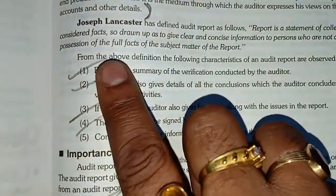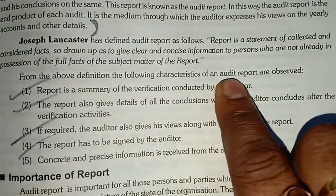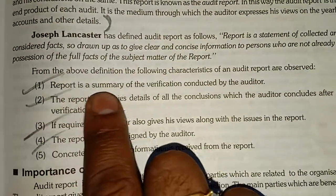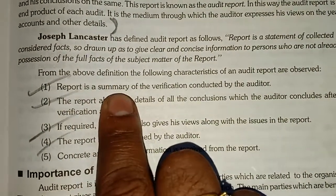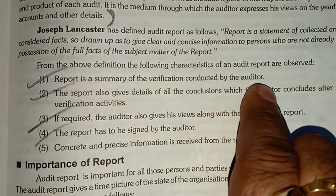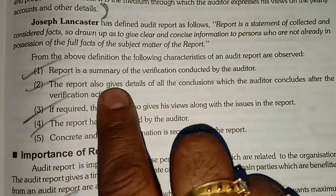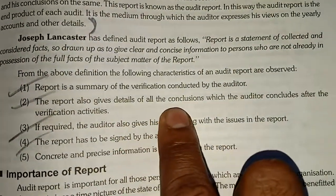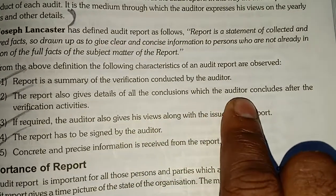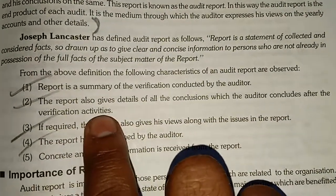From the above definition, the following characteristics of an audit report are observed. The report is a summary of the verification conducted by the auditor. The report also gives details of all the conclusions which the auditor reaches after the verification activities.